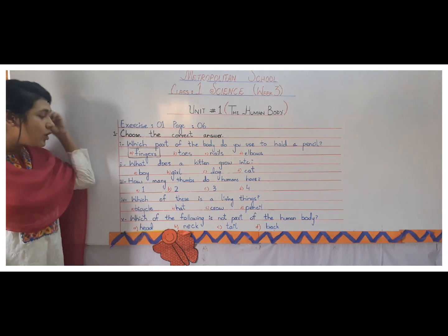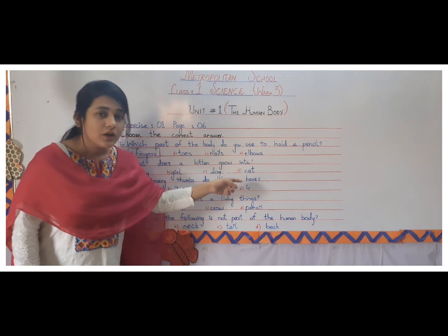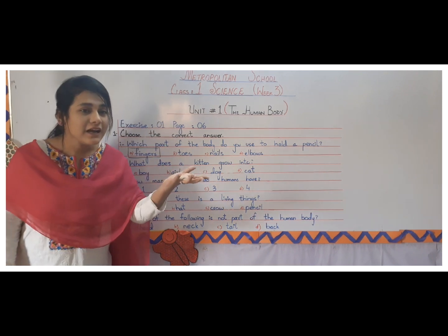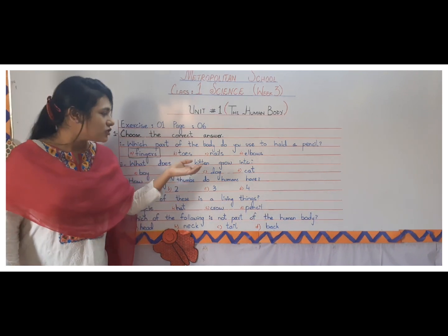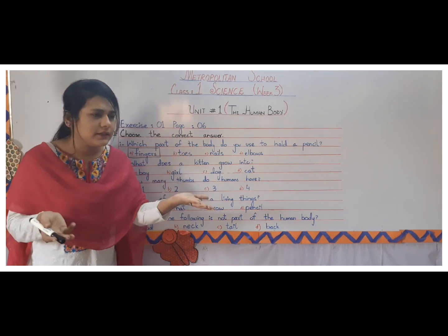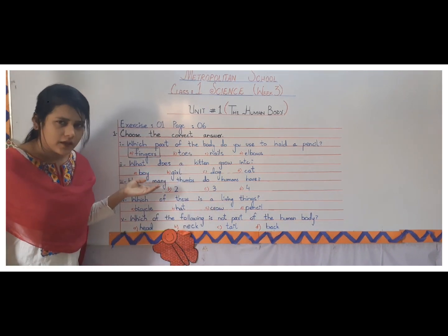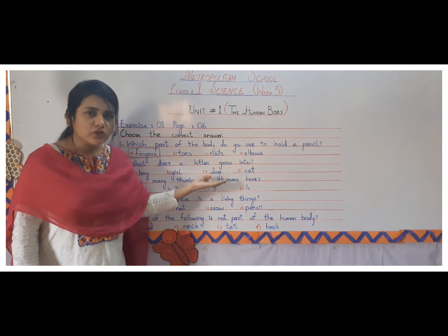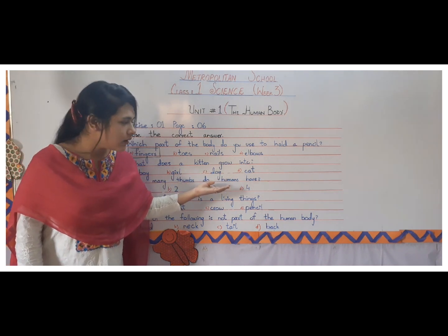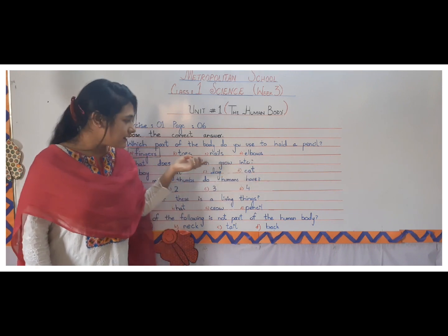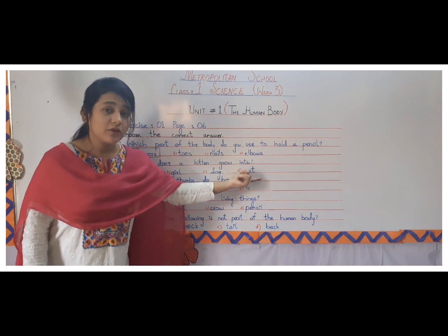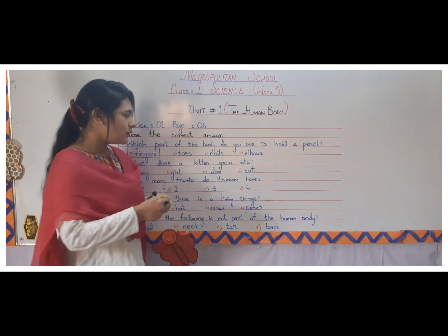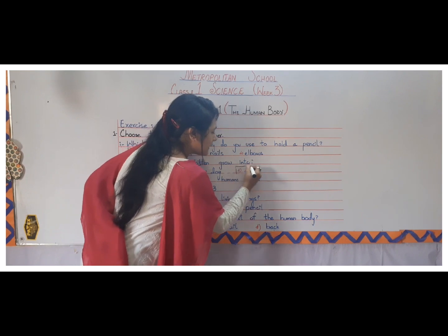Next one is: what does a kitten grow into? A kitten is the baby of a cat. So what will a kitten grow into when it is bigger — a boy, or a girl, or a dog, or a cat? A kitten is the smaller form, the baby of a cat. So a kitten will grow into a cat.